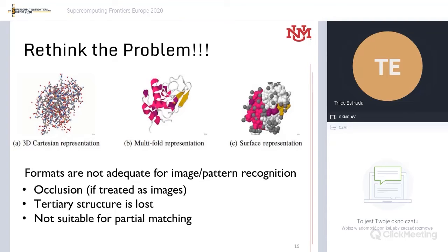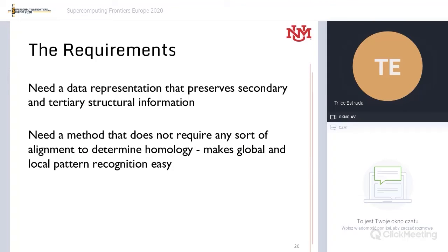First we need to look at the format of proteins. I'm presenting three different formats: Cartesian representation, multi-fold representation, and surface representations. They are not adequate for image pattern recognition because of occlusion — depending on the angle you're looking at the protein, you won't be able to see all of the tertiary structures, so for a computer the tertiary structure will be lost. They are also not suitable for partial matching for the same reason. We need a data representation that preserves secondary and tertiary structural information, and a method that does not require any sort of alignment to determine homology — making global and local pattern recognition easy and lightweight enough to be performed in-situ.